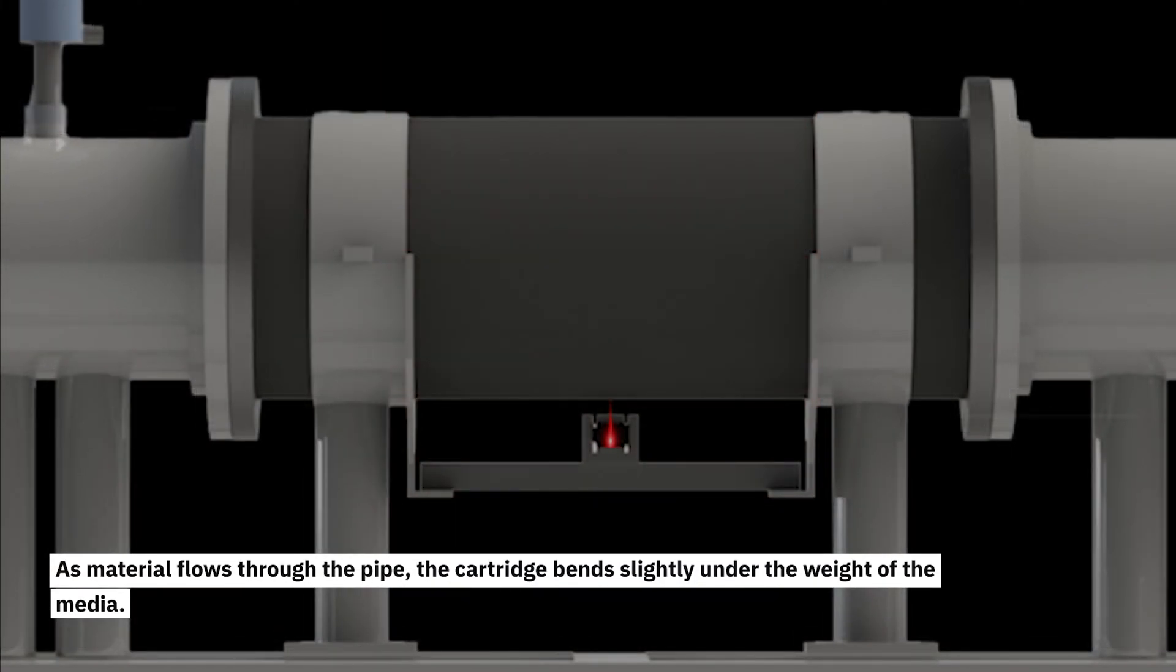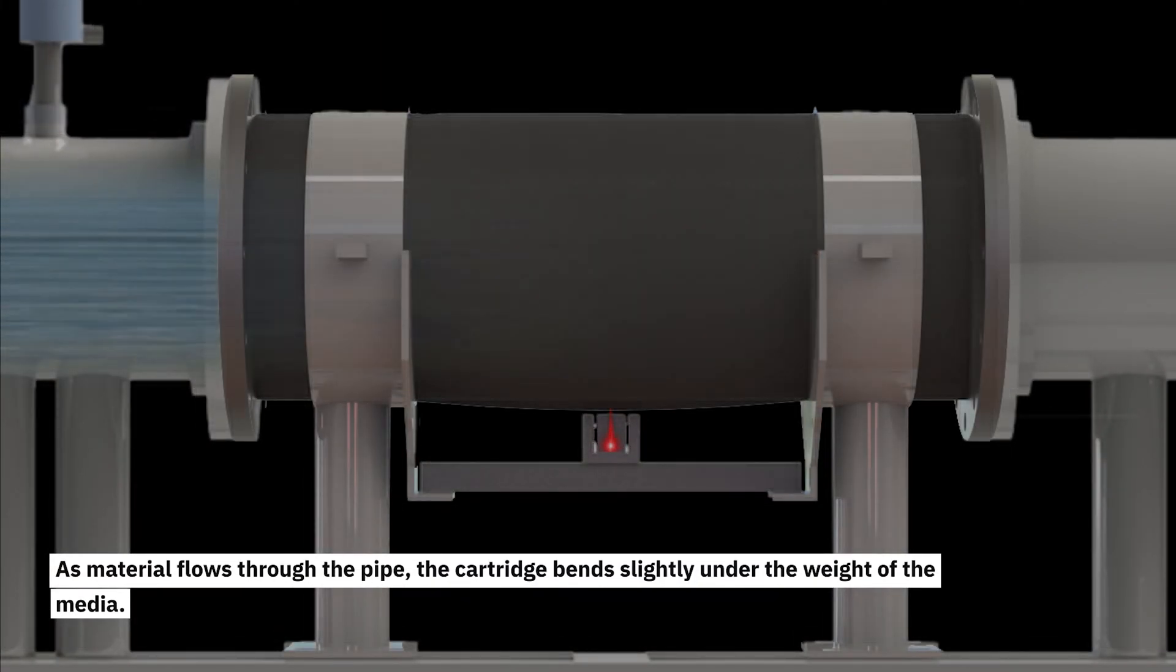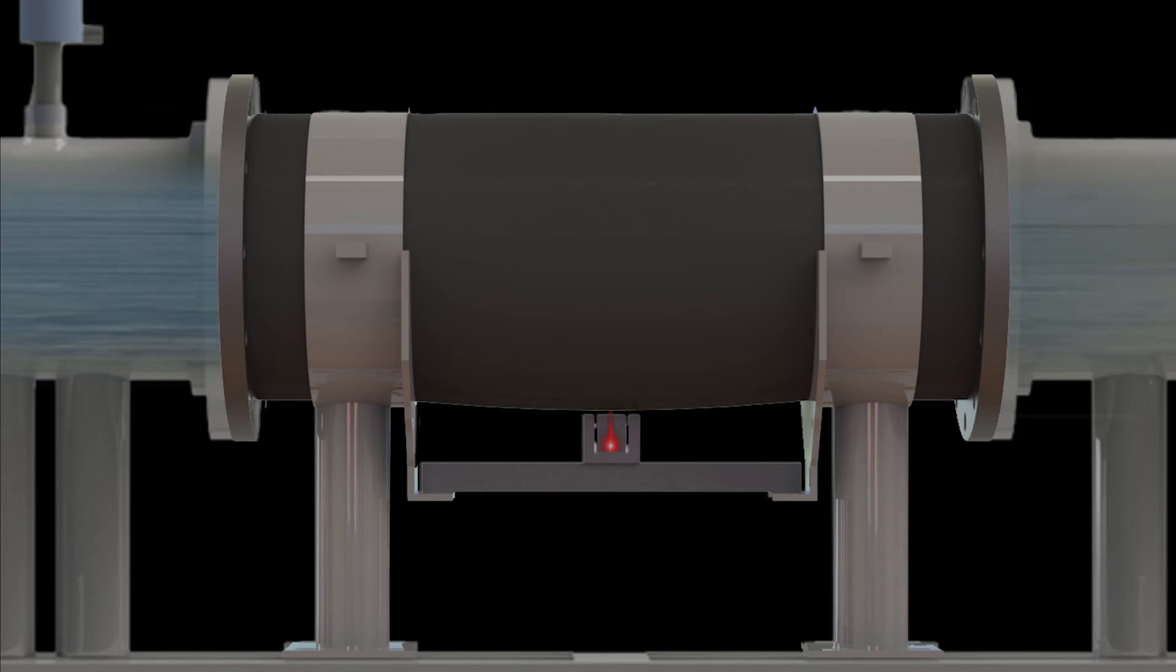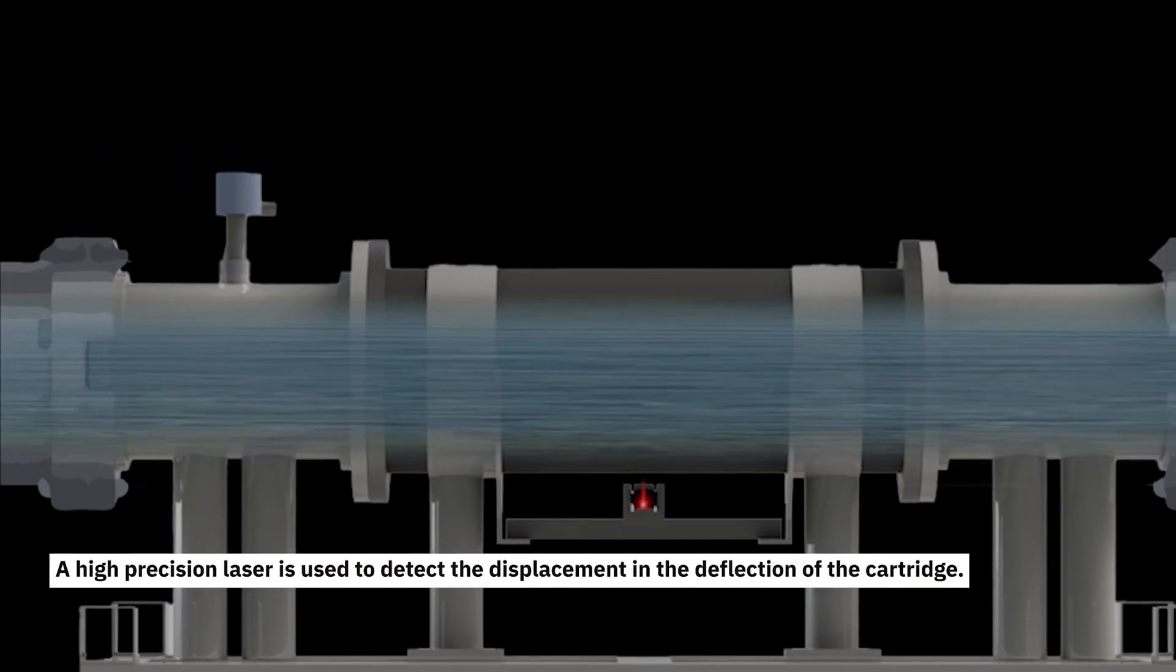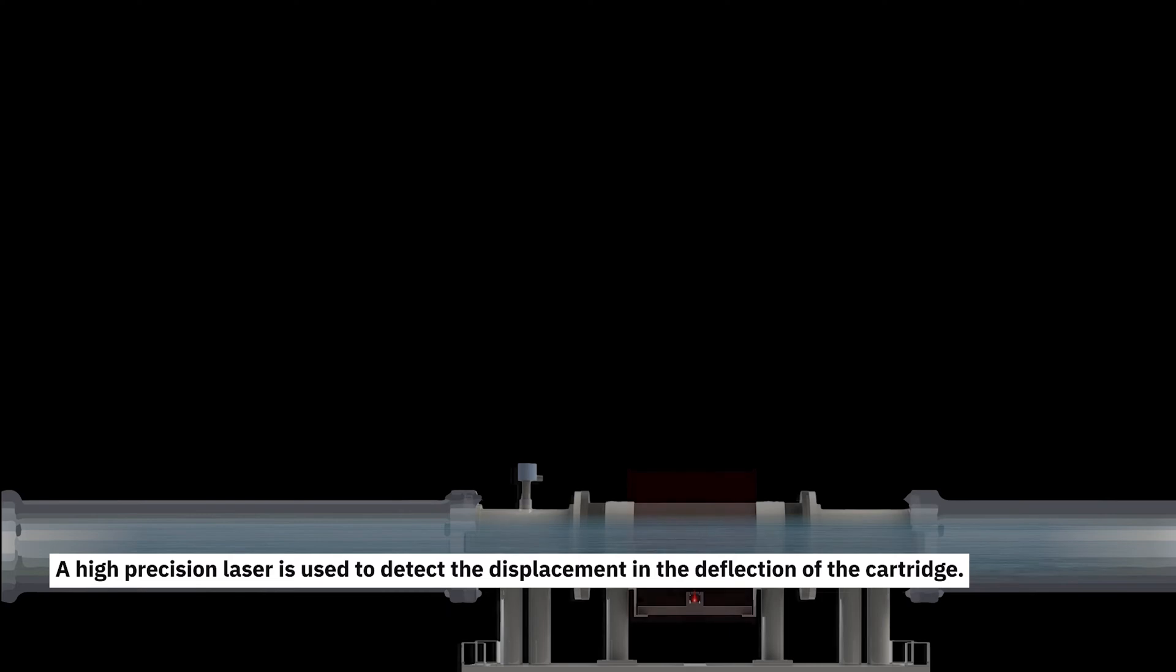As material flows through the pipe, the cartridge bends slightly under the weight of the media. A high-precision laser is used to detect the displacement and the deflection of the cartridge.